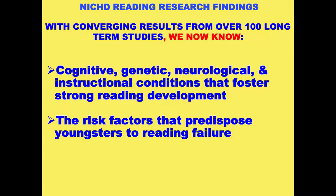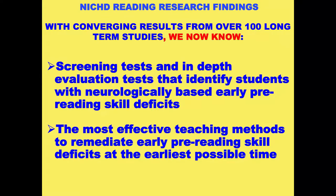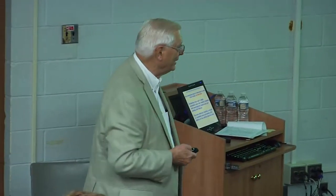We now know the cognitive, genetic, neurological, and instructional conditions that foster strong reading development. We know the risk factors that predispose youngsters to reading failure. We can use a screening test to find out where they are in kindergarten. The NICHD ran years-long series of tests comparing remedial method against remedial method, working with kids who had similar reading problems, to find out which way of remediating the deficit actually works better. You don't have to buy a whole bunch of stuff and then find out it doesn't work — they already did that for you.